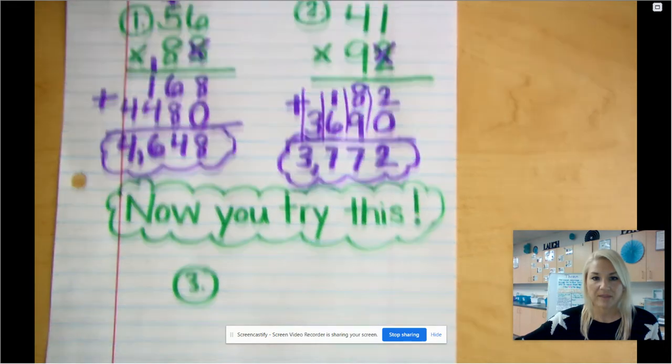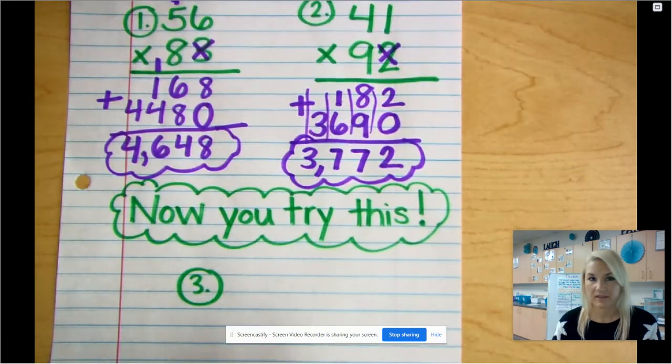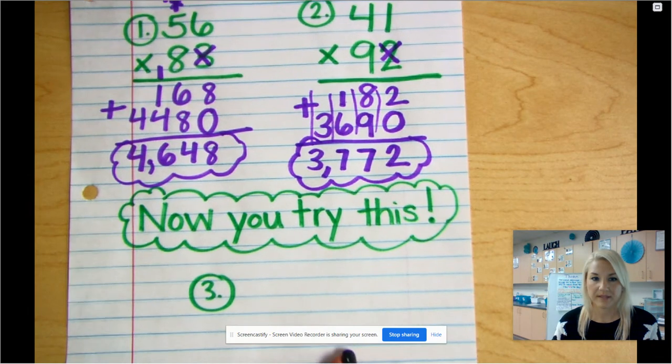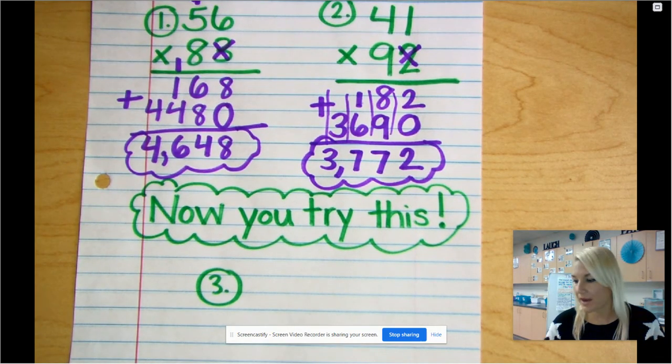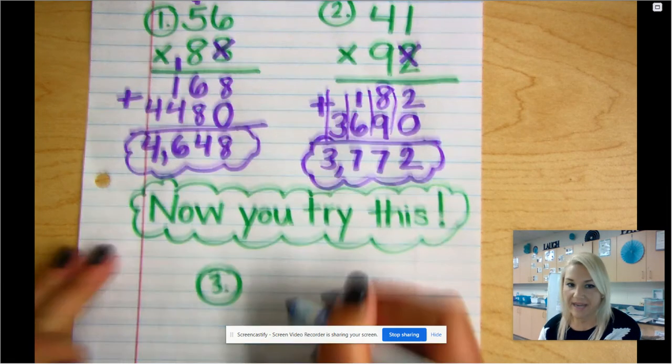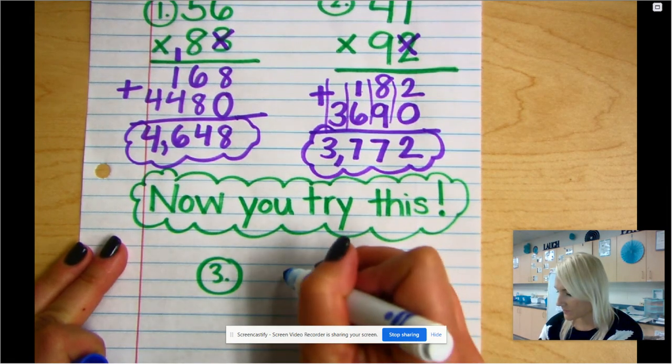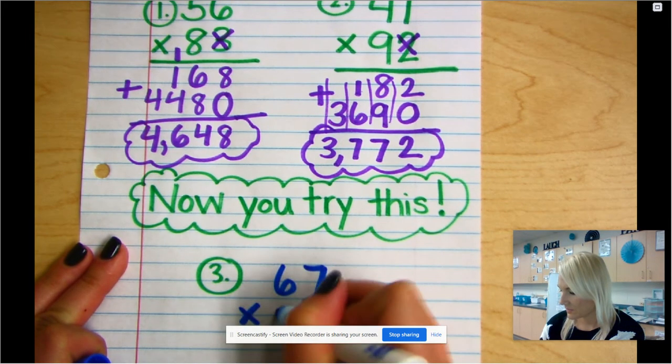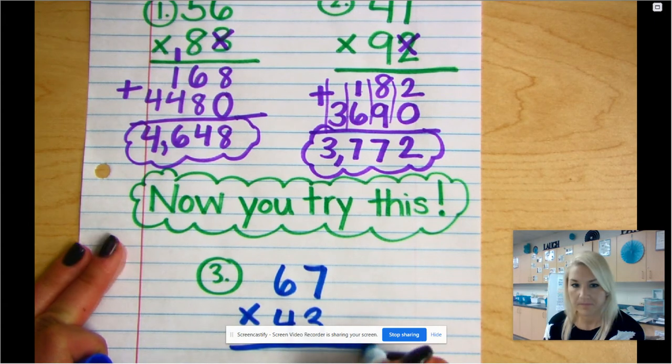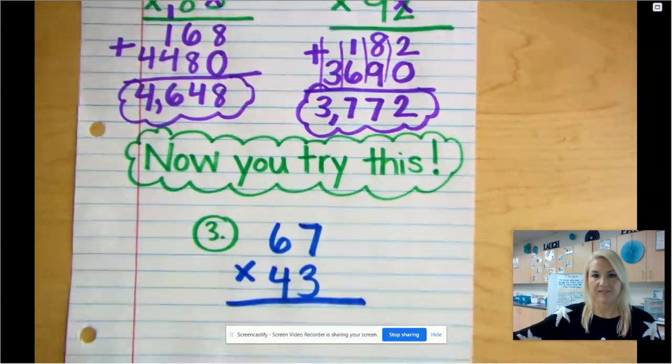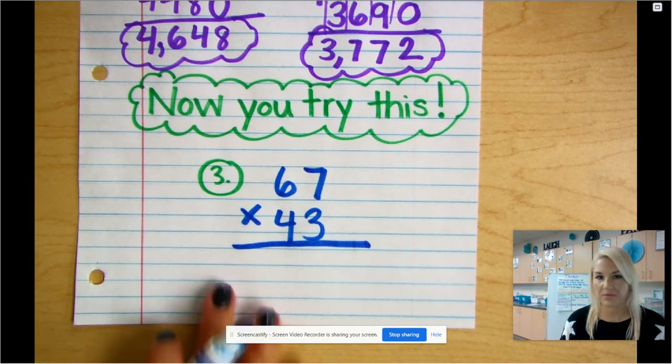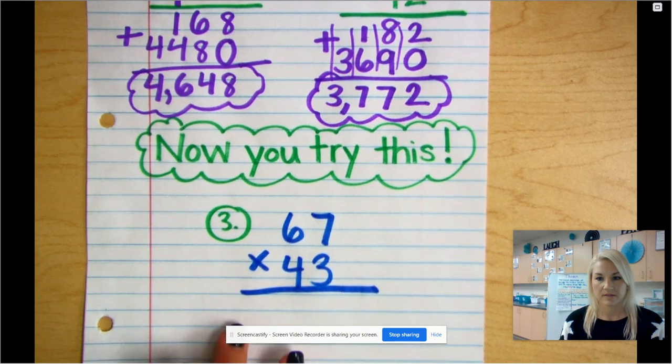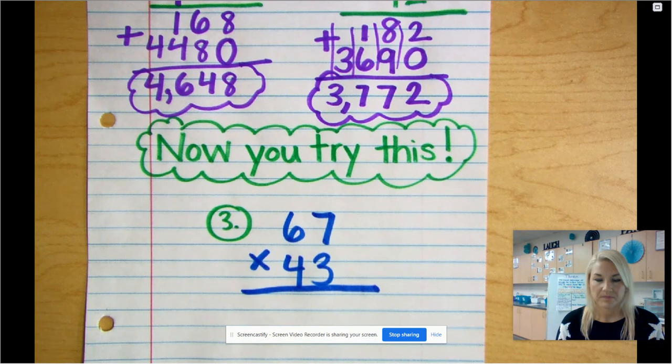And I would like you to try with your paper and pencil what I'm writing for number 3. And I'm gonna write this in blue. So go ahead and multiply 67 times 43. So 67 times 43. Go ahead and pause me. Try it out. And then press play because I'm gonna go ahead and reveal the answer.